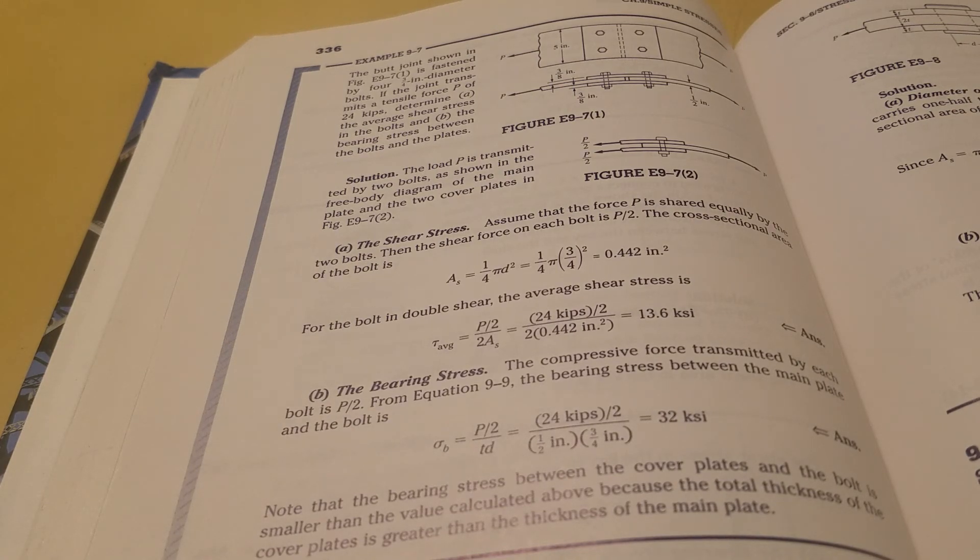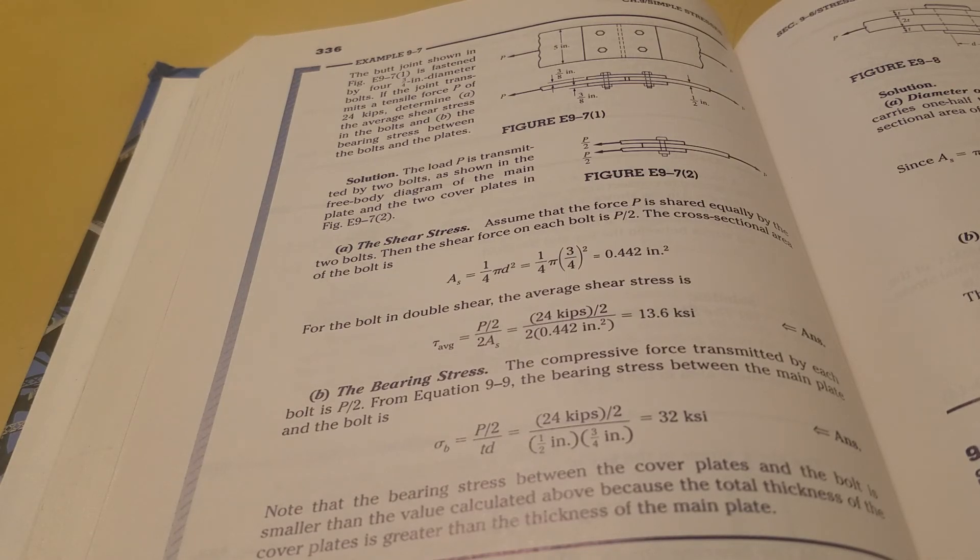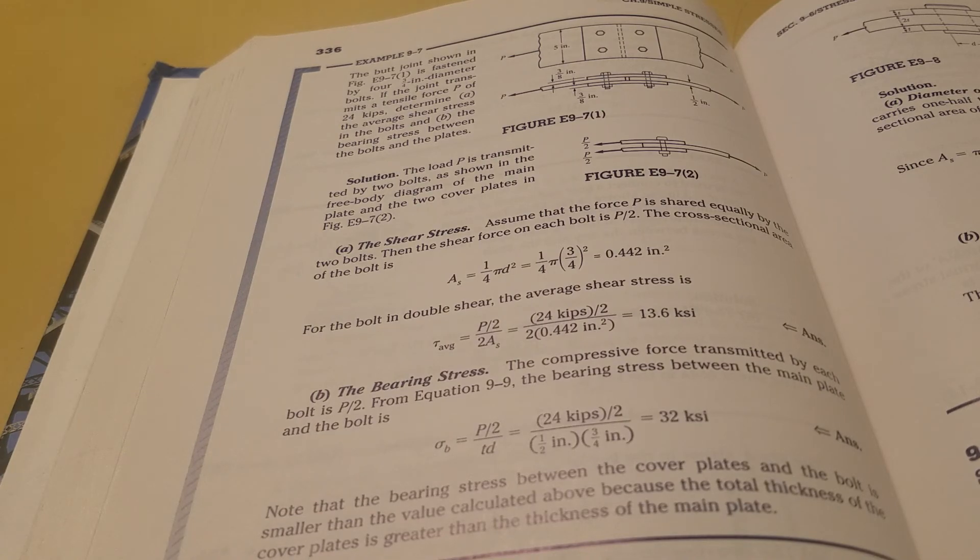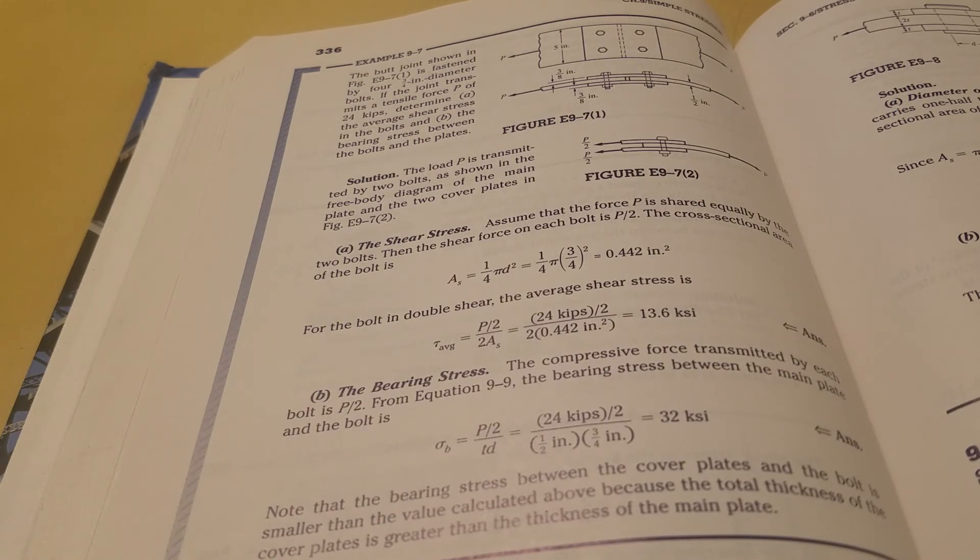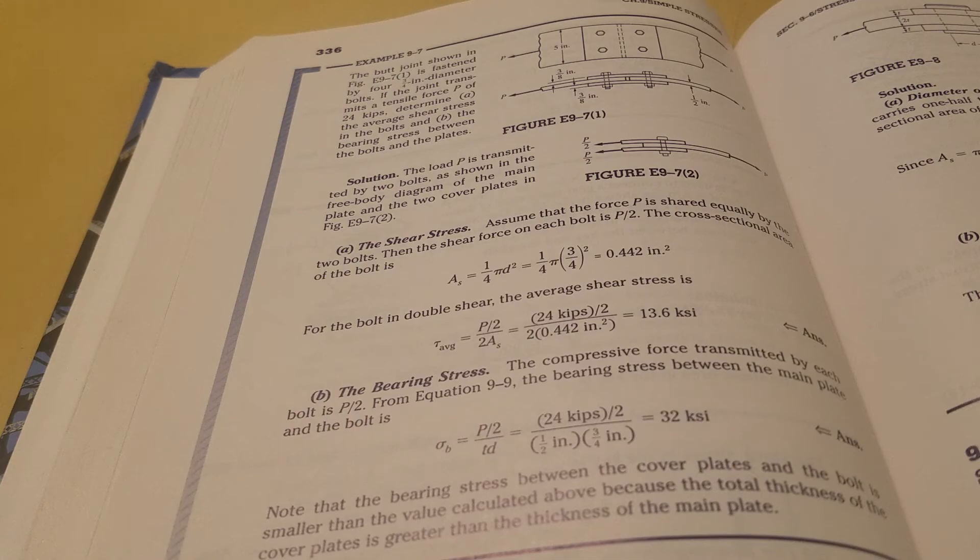If the joint transmits tensile force P of 24 kips, determine average shear stress on the bolts and the bearing stress between the bolts and the plates. We're going to skip the bearing stress and just focus on the average shear stress on the bolts.